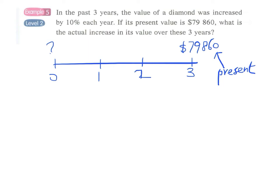From year 0 to year 1, the increase is 10%. From year 1 to year 2, also 10%. From year 2 to year 3, also 10%. So therefore, this original value, let us call this P.